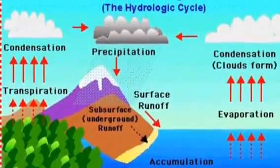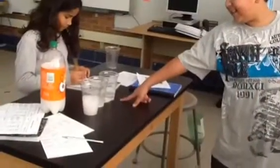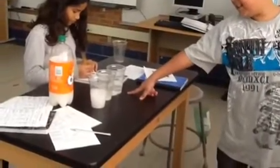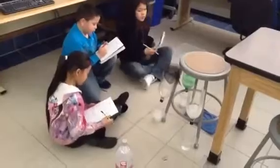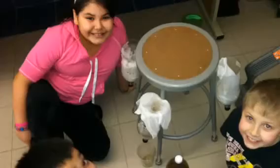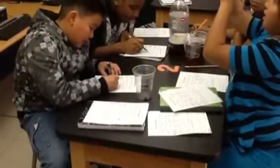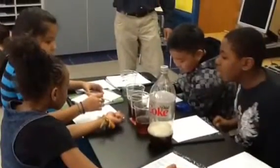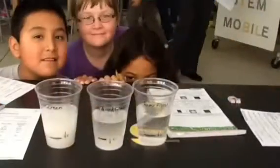Did you know pollutants from the air and land can get into our water through the water cycle? We learned how to take pollutants out of our water. First, we did research on different filter materials.